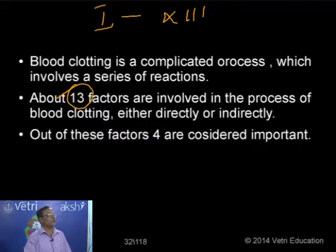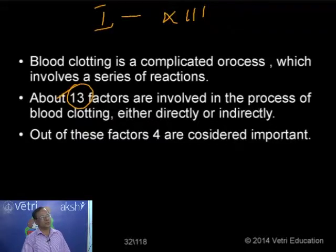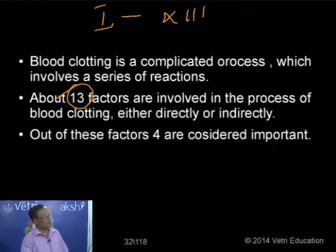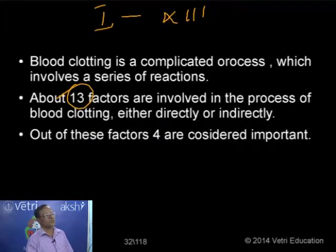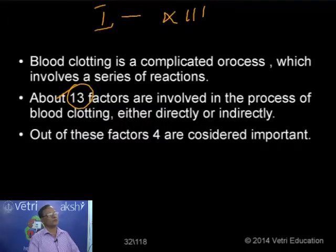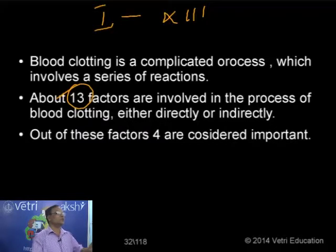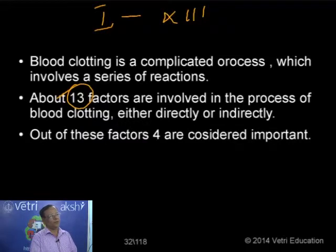Factor number 1 is fibrinogen. Factor number 2 is prothrombin. Factor number 3 is thromboplastin. Factor number 4 is calcium ions. Factor number 5 is Labile factor. Factor number 6 is accelerin. Factor number 7 is proconvertin. Factor 8 is antihemophilic factor. Then Christmas factor, Stuart factor, Hageman factor, and so on — we have nearly 13 factors named 1 to 13, all playing a major role in the clotting of blood.